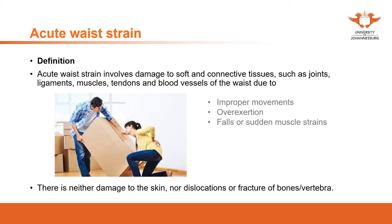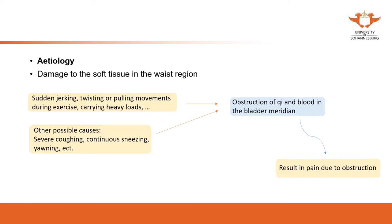This condition involves soft tissue, so it is more related to the muscles. It is not damage to the skin, not a fracture, and not dislocation of a vertebra. It can sometimes be very severe — the patient may not even be able to move. The main cause is damage to the soft tissue in the lumbar region.